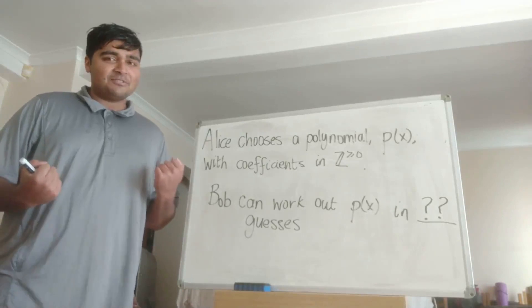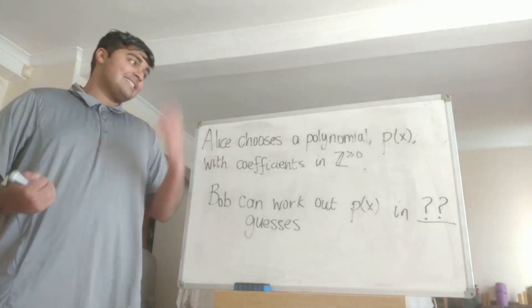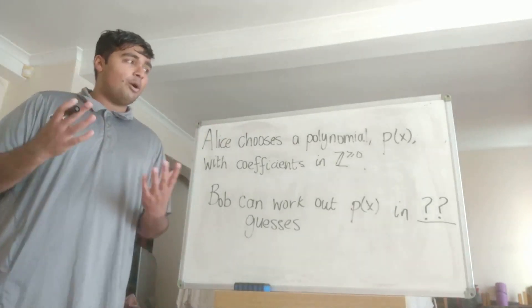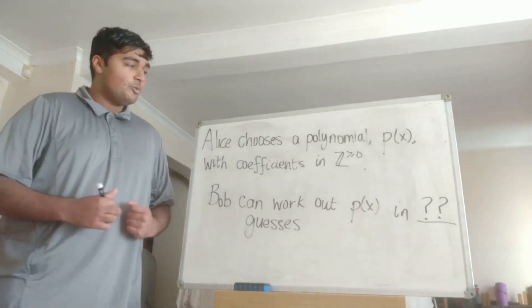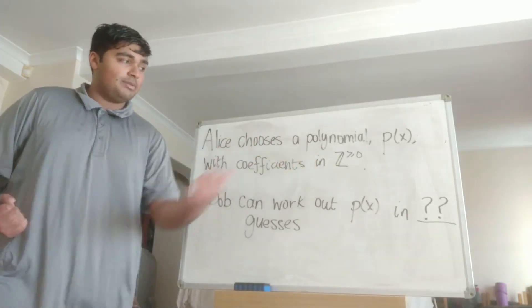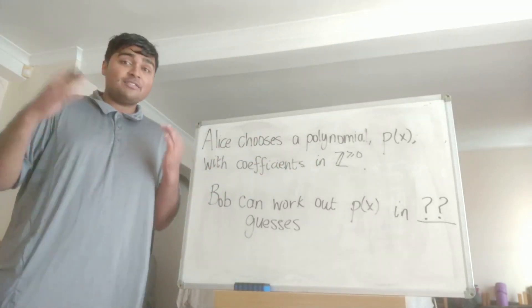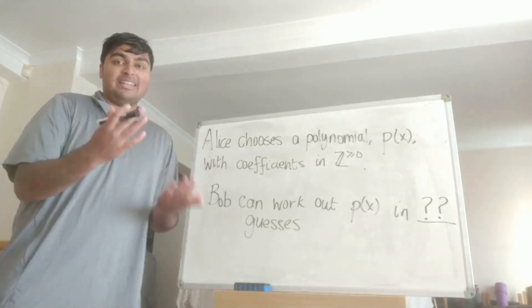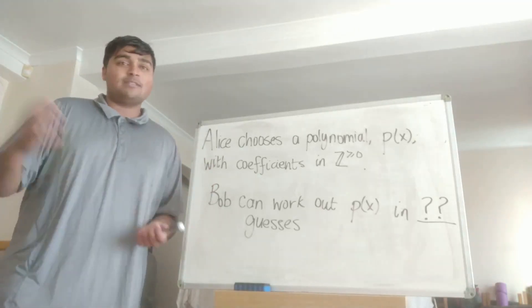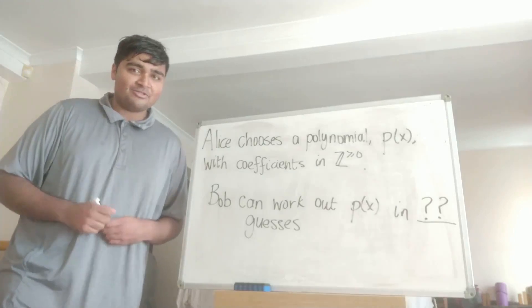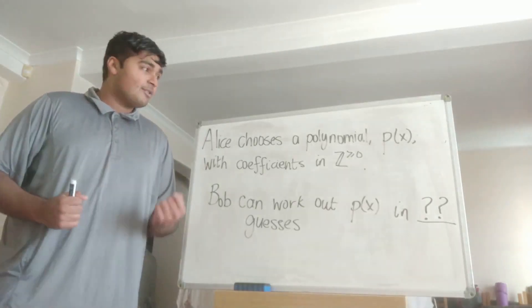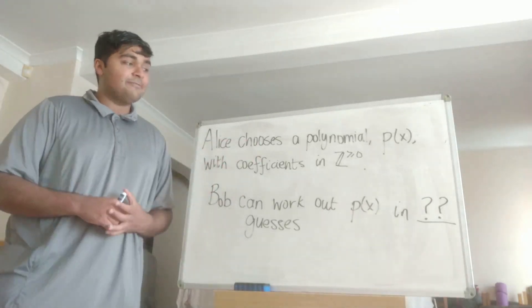So what is this fascinating result? Well, suppose we have someone called Alice and they are allowed to choose a polynomial, which we're going to call P(x), with coefficients being non-negative integers. So this polynomial can be a linear function, it can be a quadratic, it can be degree 4829. It doesn't really matter as long as all the coefficients are non-negative integers.